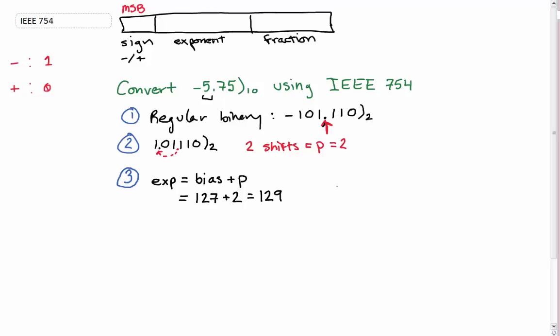We know that 128 in base 10 is equal to 10000000 in base 2. So if we have 129, all we're doing is just adding 1. That means our exponent is going to be 10000001. All I did was convert our 129 into regular binary, and that is our exponent value.